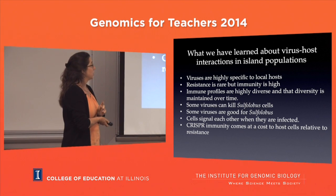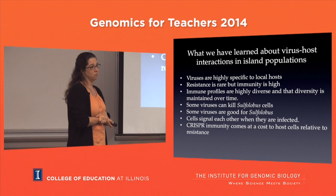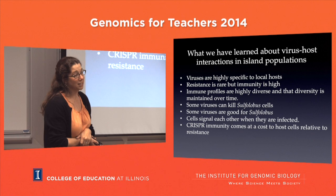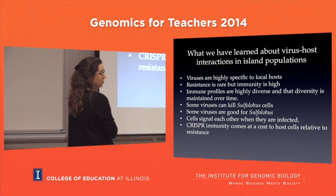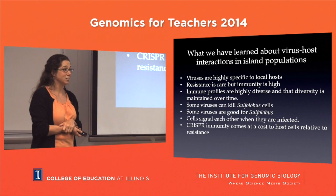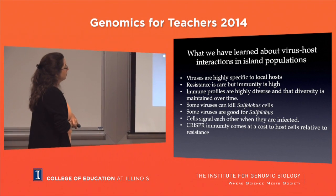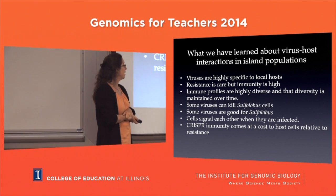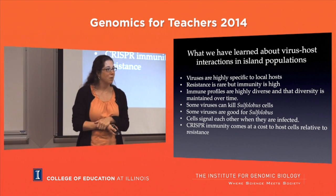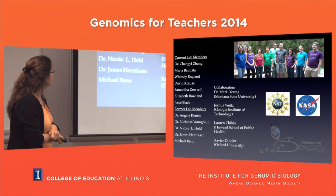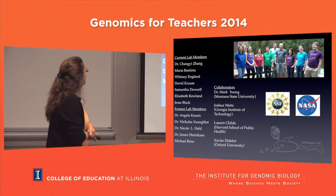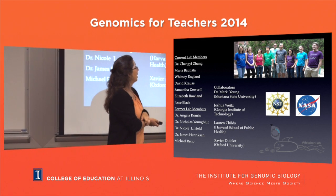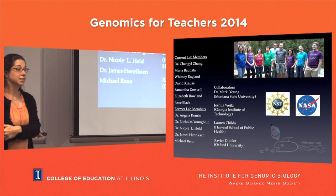What we've learned: viruses are pretty specific to local hosts, and even within the local environment there's variation in who they can affect. Resistance is rare but immunity is high in these organisms. Immune profiles are diverse and that diversity is maintained over time - there isn't immunodominance of one immune type, and that diversity plays into the evolution of the virus. Some viruses kill Sulfolobus, but other viruses are good for it - if you get chronically infected you can use the virus as a weapon against competing cells, increasing your own fitness. Maria is finishing a paper showing that CRISPR immunity comes at a cost to the cell relative to resistance. We've been funded the whole time by NSF and NASA.